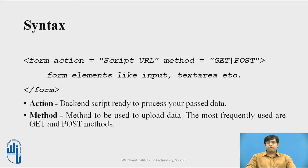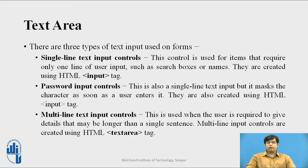Most frequently we use either the GET method or the POST method. Form tags have different elements; one commonly required is the text area. We have three types of text input available. The first is single line text input, which takes a value as a single line — examples include first name, last name, contact number, and email ID. Single line text input controls are created using the HTML input tag.